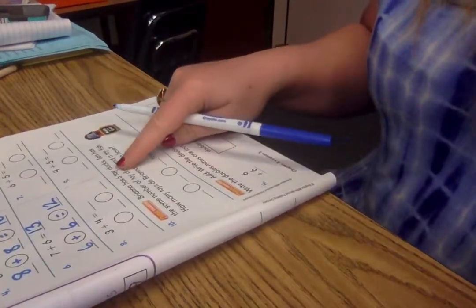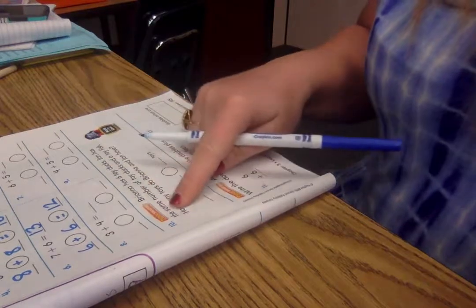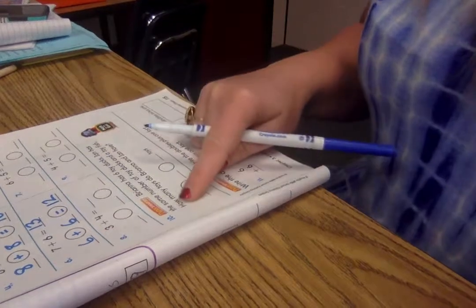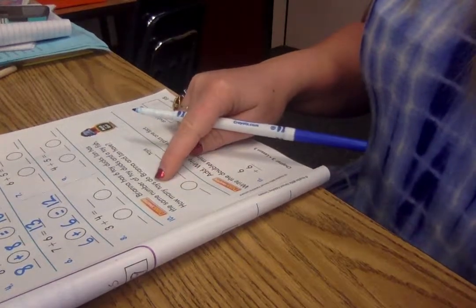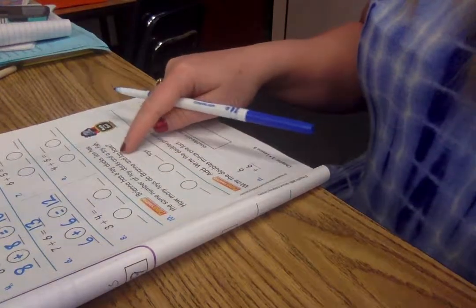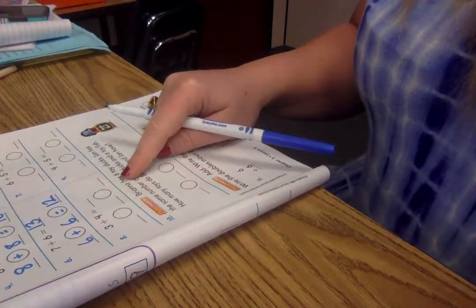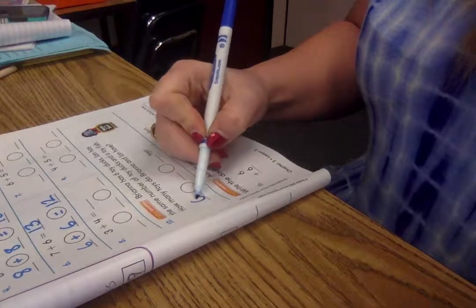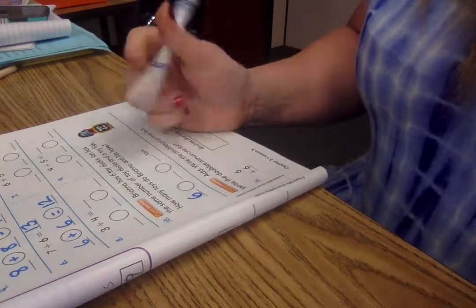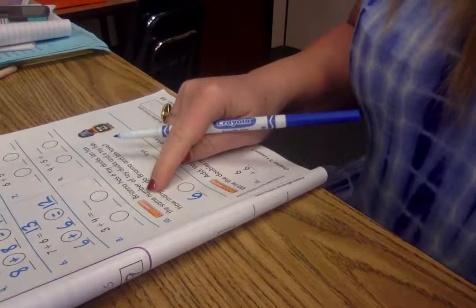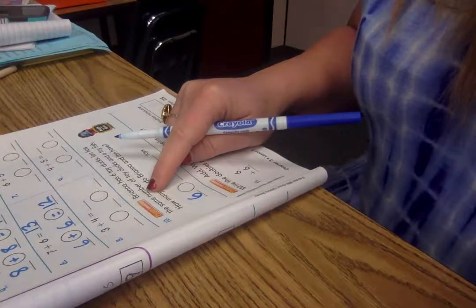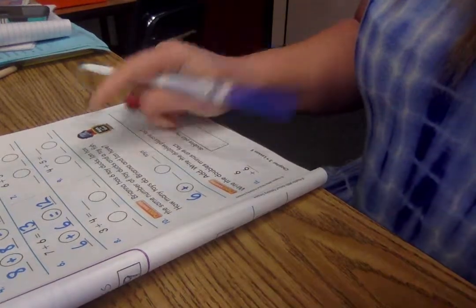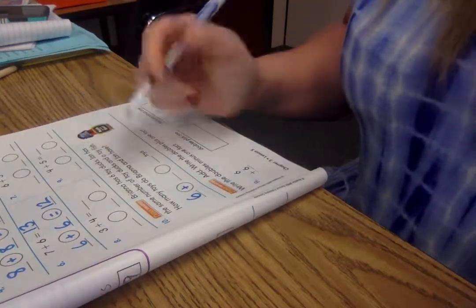Brianna has 6 toy ducks. Ian has the same number of toy ducks and a toy fish. How many toys do Brianna and Ian have? Well, Brianna has how many toys? 6. Please write that addend in your equation. Ian has the same number plus a toy fish. So how many does Ian have? 7.